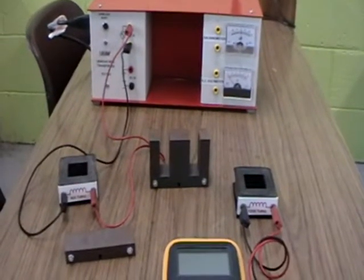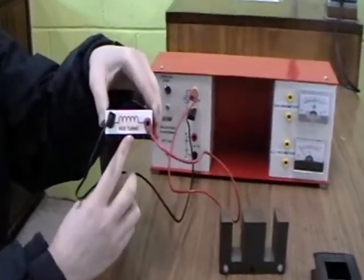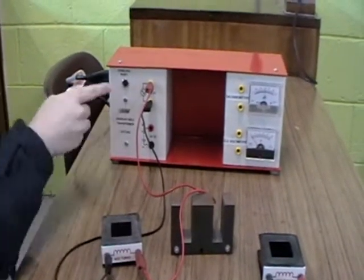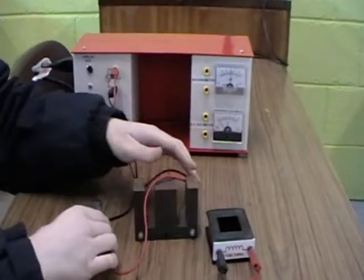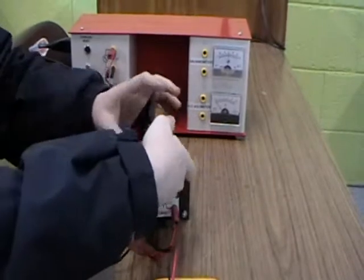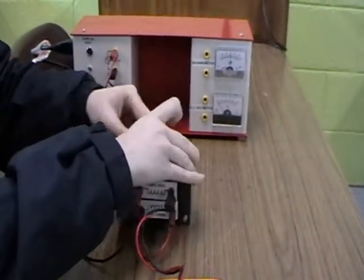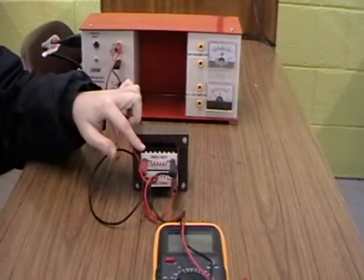A transformer is an AC device that works by mutual induction. It consists of a primary coil with NP turns connected to an AC source of voltage VP and a secondary coil with NS turns. Both coils are mounted on a laminated soft iron core.